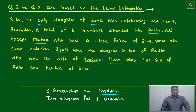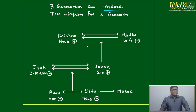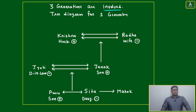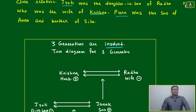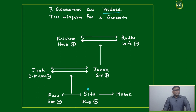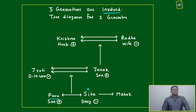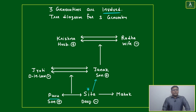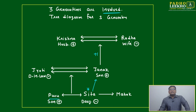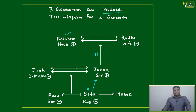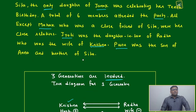We'll start building the diagram with Sita. The last statement is very clear: Puru was the son of Anna and brother of Sita. So Puru is placed alongside Sita, and both share Janak as their father. Jyoti is the daughter-in-law of Radha, meaning Radha is one generation above Jyoti. Radha is the wife of Krishna.